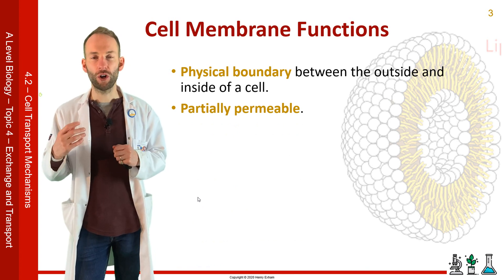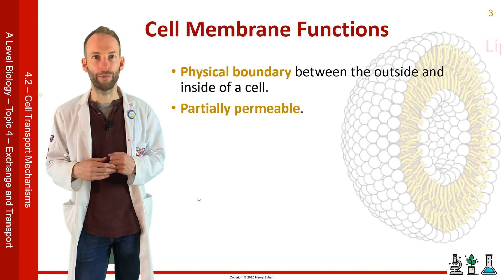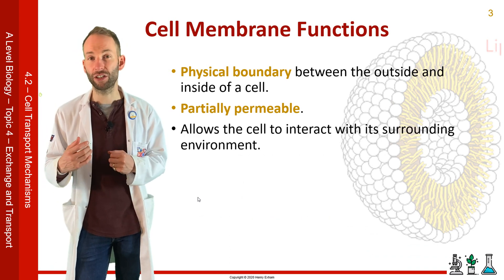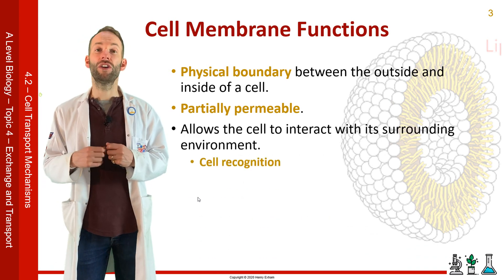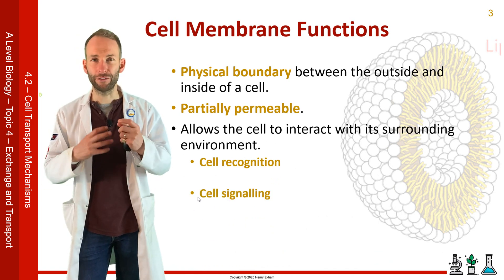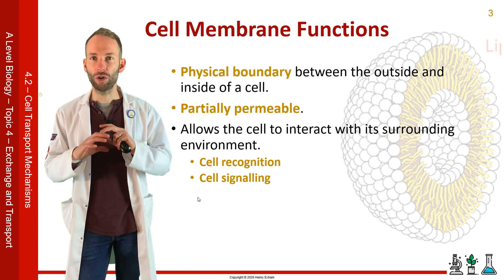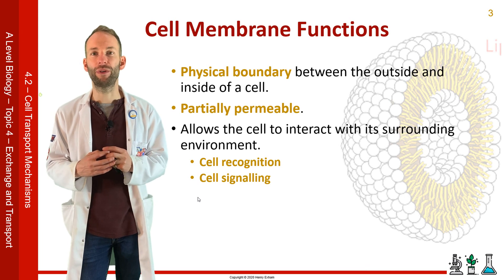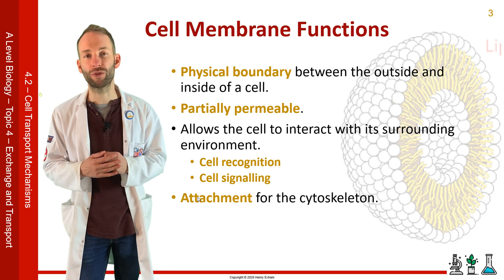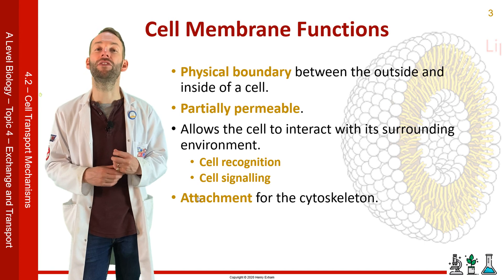This means you can have different compositions of fluids within a cell and on the other side outside a cell as well. It also has functions that allow it to interact with its surrounding environment. This includes cell recognition, so cells can recognise each other, whether they're foreign or whether they're your own cells, and also cell signalling for communication between cells within tissues and organs. It also has a role to play in the shape of a cell because it's where the cytoskeleton attaches onto the underside of the cell membrane. It doesn't give any strength or support — that would be a cell wall — but it does contribute to the shape.